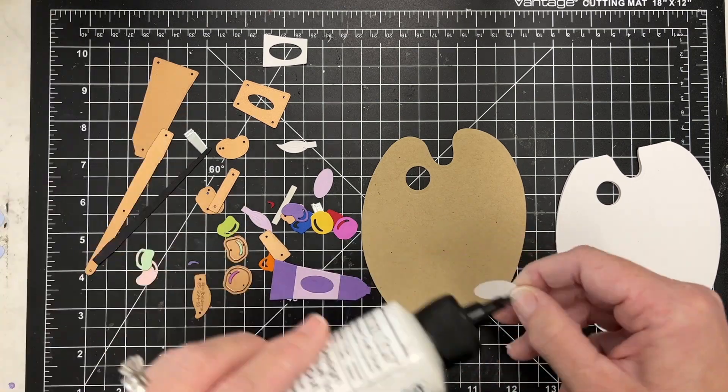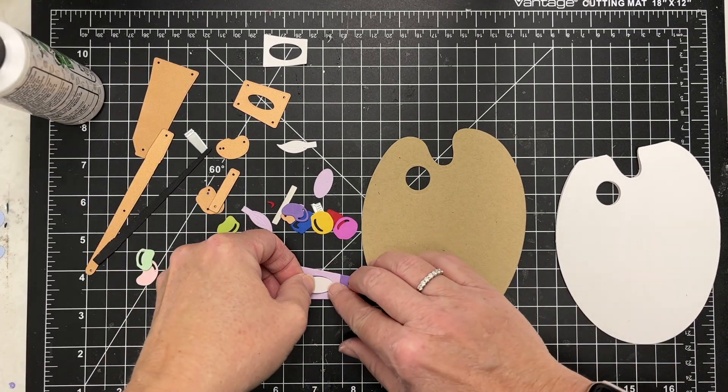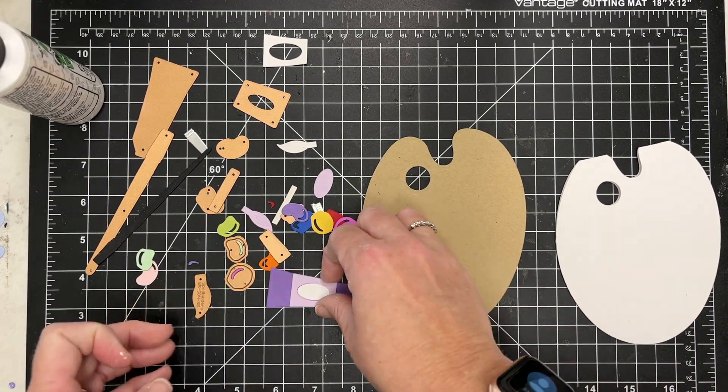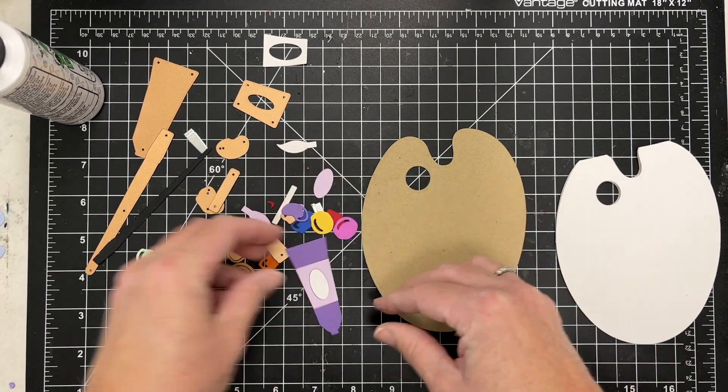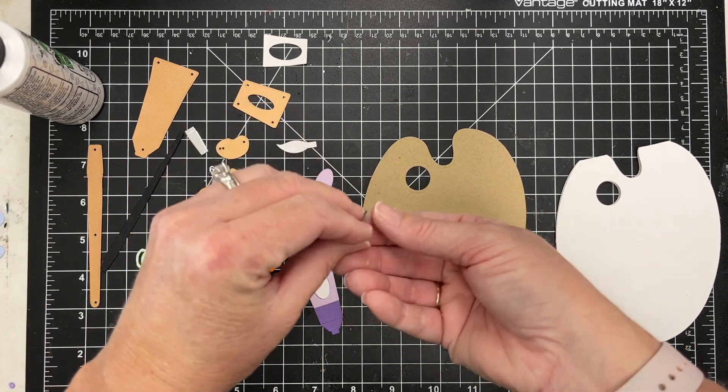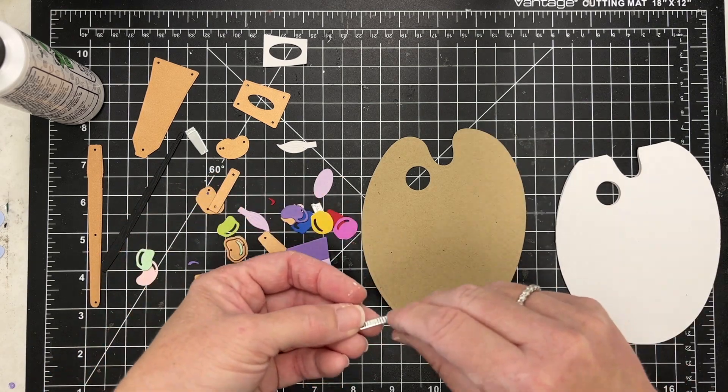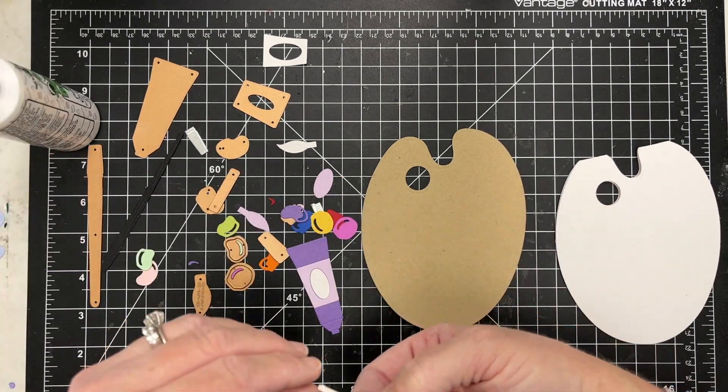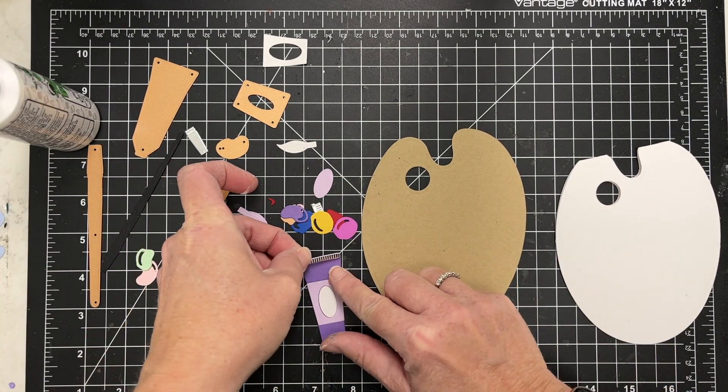You could stamp on that. That would be cute if you had a little tiny stamp. You could maybe stamp something on there or put some letters on there. You could spell a word like red or blue if you had some small word stamps. That would be really cute, some alphabet stamps.